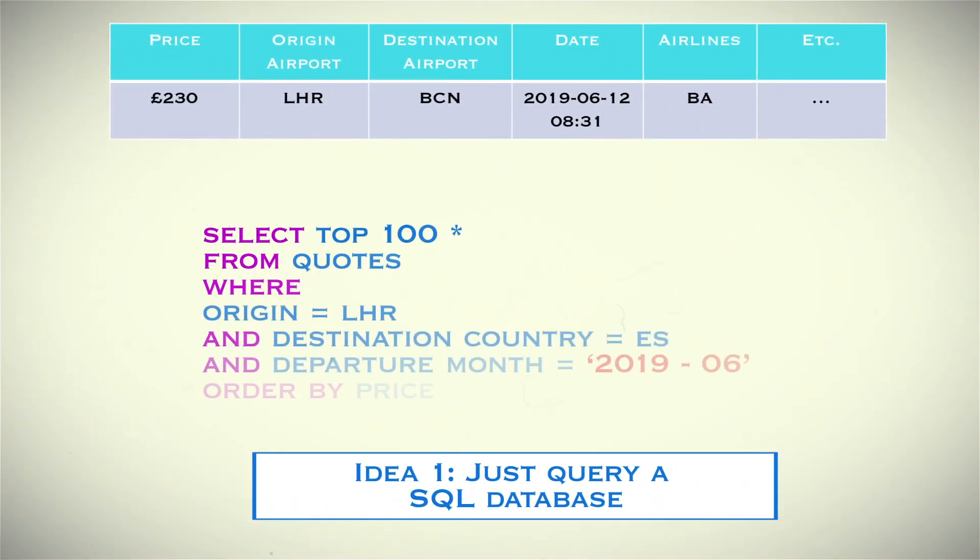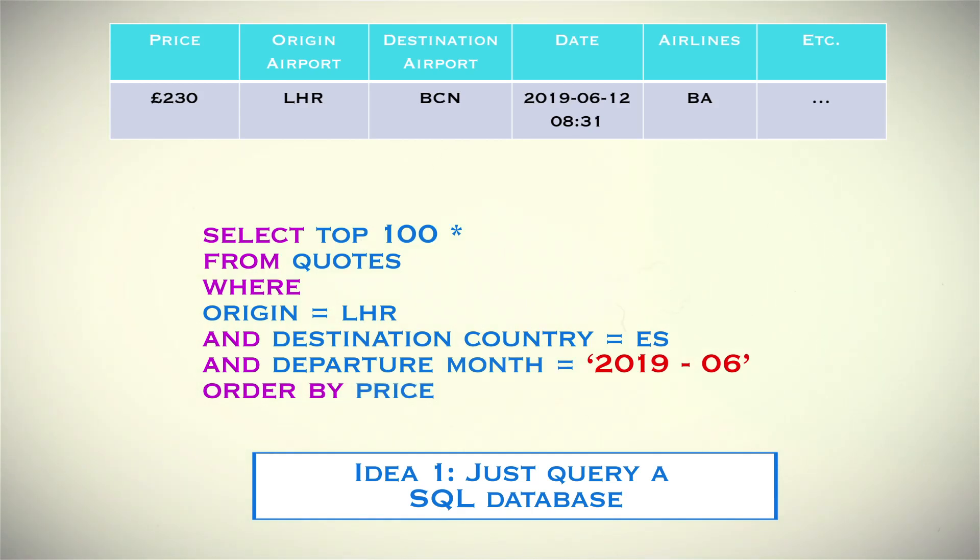We started with a simple SQL table. Each row represents one quote — one price from an airline or travel agency. Pretty simple, right? And yes, it worked for a while at least. After some time we started to have more and more users. More users make more queries, more prices get written into our table and the table grows. When the table became very large, the queries became very slow even with indices. So we had to build something smarter.